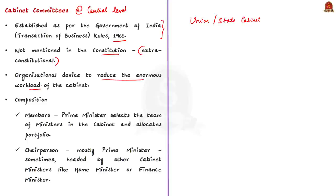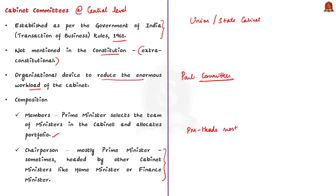You can compare Cabinet Committees with Parliamentary Committees, where Parliamentary Committees try to reduce the workload of Parliament. Regarding composition: the Prime Minister selects a team of Ministers and allocates portfolios. Usually, Cabinet Ministers are selected as members, but sometimes non-Cabinet Ministers also become members. Mostly the Prime Minister heads the Cabinet Committees — whenever the PM is a member, he or she invariably presides. But sometimes Cabinet Committees are also headed by other Cabinet Ministers like the Home Minister or Finance Minister.